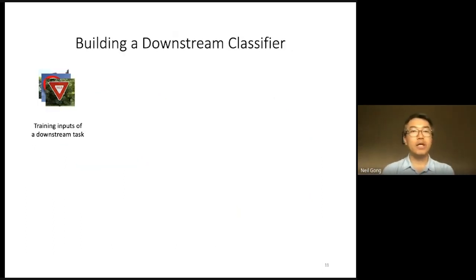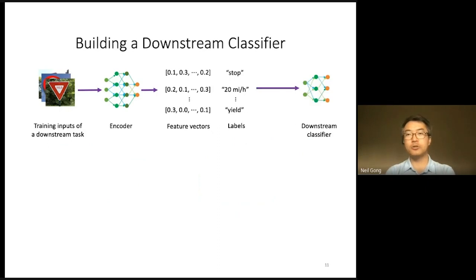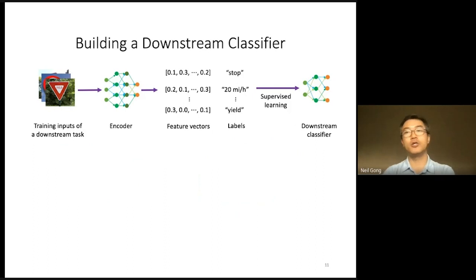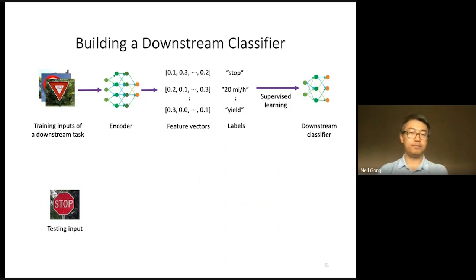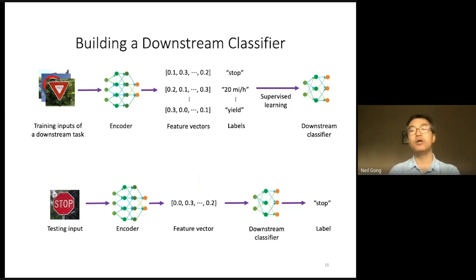Suppose we are given a set of training inputs of a downstream task and a pre-trained encoder. We first use the pre-trained encoder to produce a feature vector for each training input. These feature vectors and the corresponding labels are then used to build a downstream classifier, following the standard supervised learning paradigm. Given a test input, we first use the pre-trained encoder to produce its feature vector and then use a downstream classifier to predict its label.